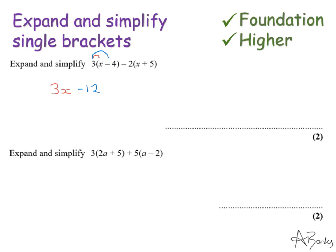Now I'm going to do the second bracket and I'm going to do it all in one go. So I've got minus 2 times x that is minus 2x and then I've got to do my minus 2 multiplied by the plus 5 which is minus 10. So that's my expanding done and that will get me one out of my two marks.